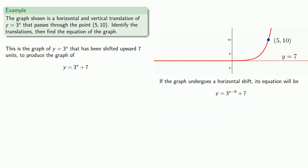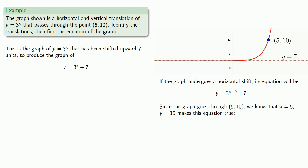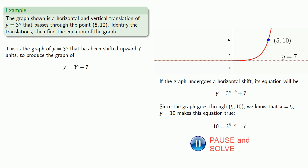Now if the graph also undergoes a horizontal shift, its equation will be y equals 3 to the power x minus h, plus 7. Since the graph goes through the point (5, 10), we know that x equals 5 and y equals 10 makes this equation true. Substituting those values in and solving for h gives us h equal to 4.